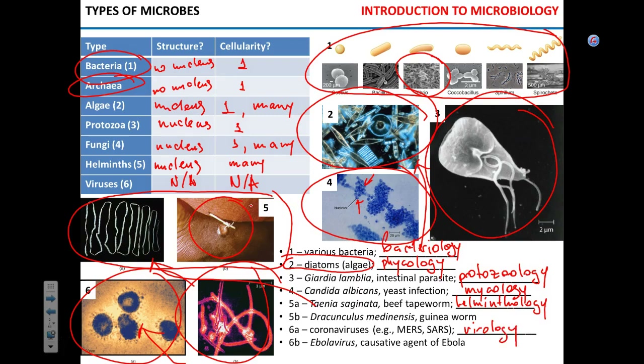Before we move on — what you absolutely must know is whether a certain microbe has or does not have a nucleus, and whether the microbe is unicellular, multicellular, or — like algae and fungi — can technically assume both. For example, if I ask which of the following is a multicellular organism and give you bacteria, archaea, viruses, and helminths — you pick helminths.